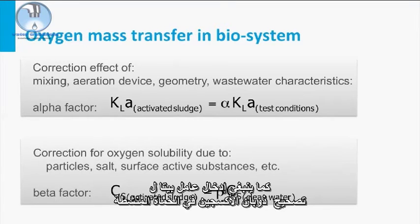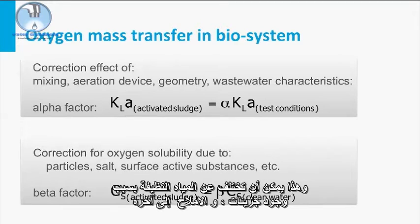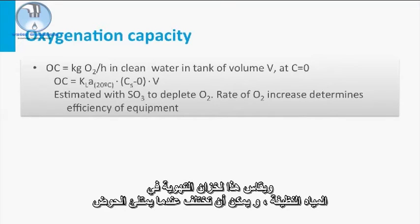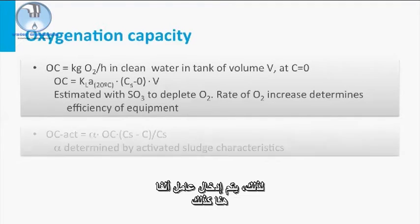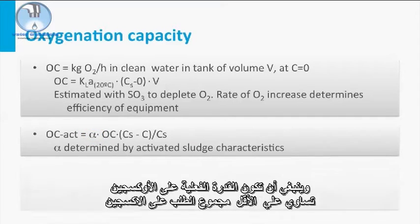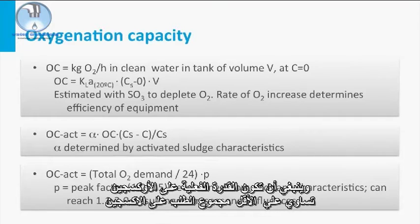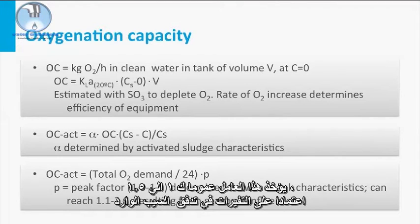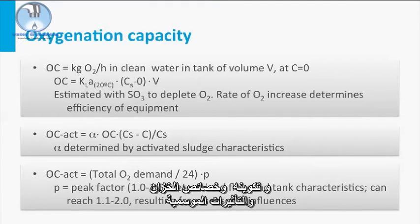A beta factor should also be introduced to correct for oxygen solubility in activated sludge, which can differ from clean water because of the presence of particles, salts, etc. The oxygenation capacity is measured in clean water and can differ when a tank is filled with activated sludge, so the alpha factor is introduced here as well. The actual oxygenation capacity should be at least equal to the total oxygen demand of the biological process times a peak factor, generally taken as 1 to 1.5 depending on fluctuations in influent compositions and flow, tank characteristics, and seasonal influences.